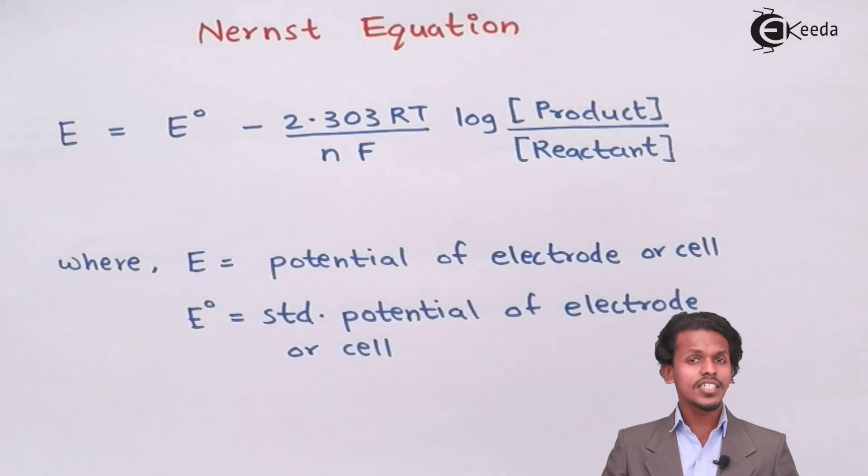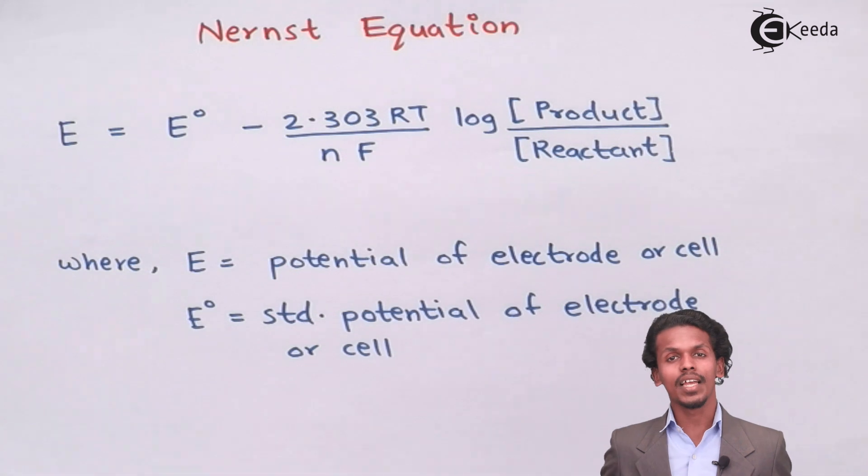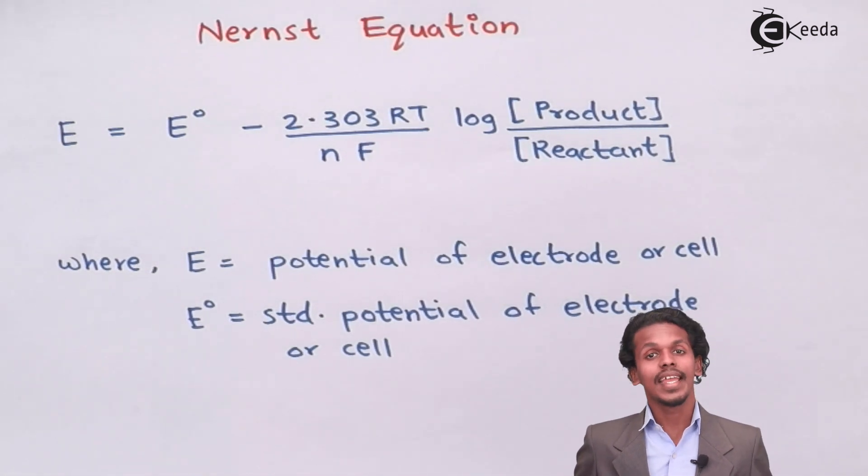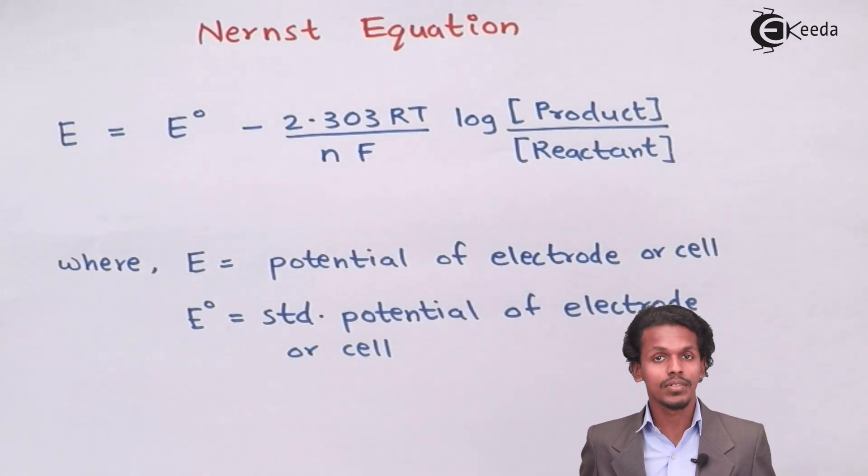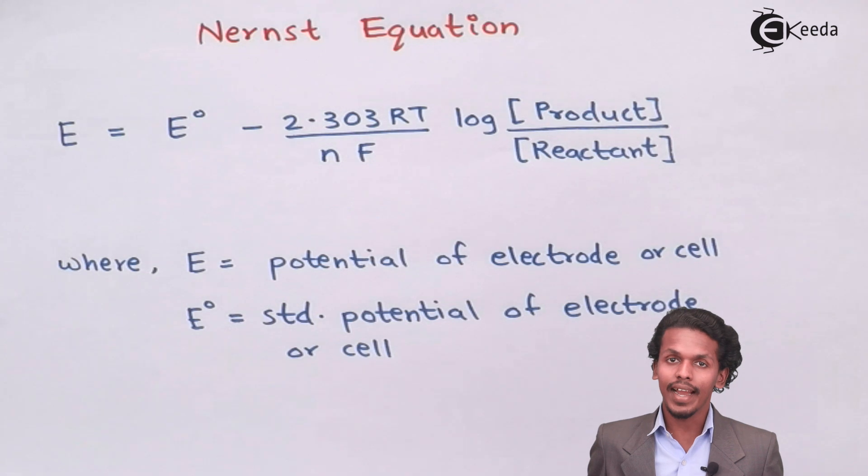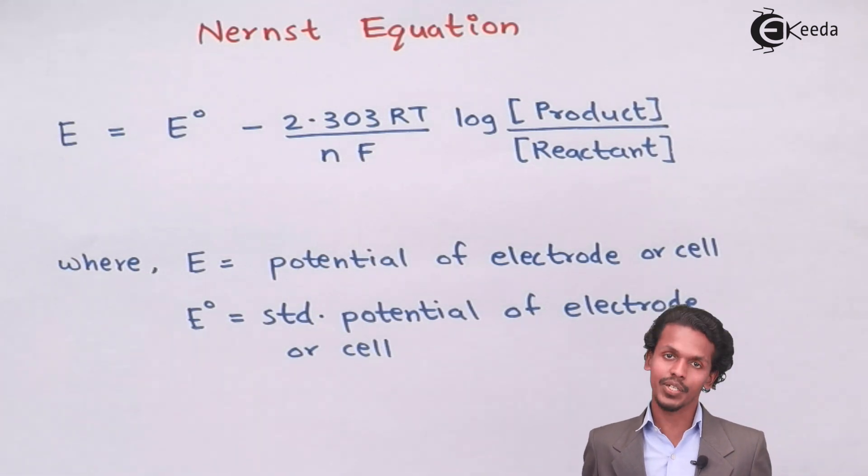The Nernst equation gives an idea about what would be the cell potential or electrode potential of a particular anode or cathode with its concentration of the product or reactant that has been involved in the overall galvanic cell. Let me give you a short representation of what is Nernst equation.